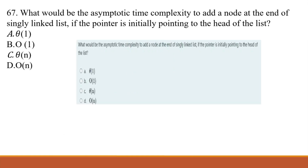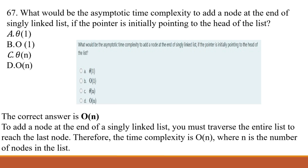Question 67: What should be the asymptotic time complexity to add a node at the end of a singly linked list if the pointer is initially pointing to the head of the list? A) Theta(1), B) O(1), C) Theta(n), D) O(n). The correct answer is D, O(n). To add a node at the end of a singly linked list, you must traverse the entire list to reach the last node. Therefore, the time complexity is O(n), where n is the number of nodes in the list.